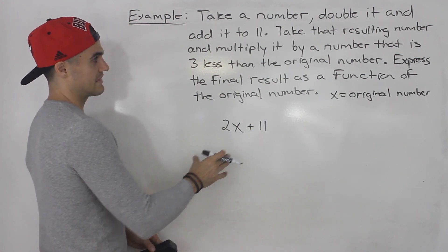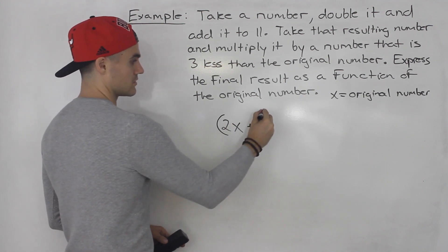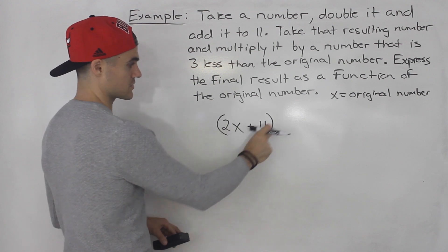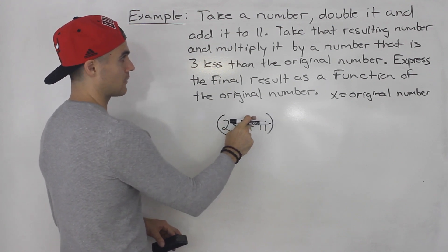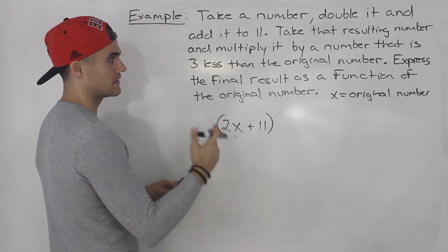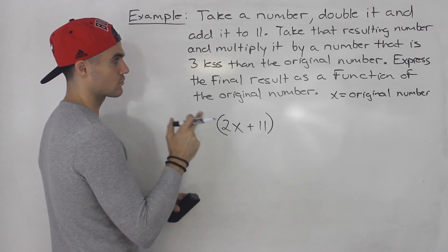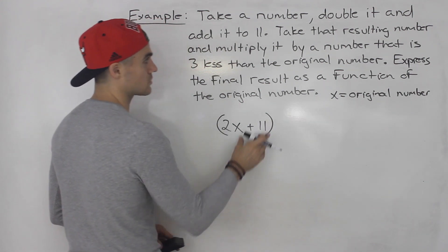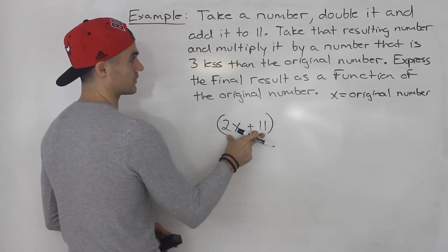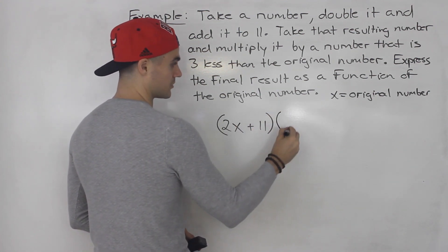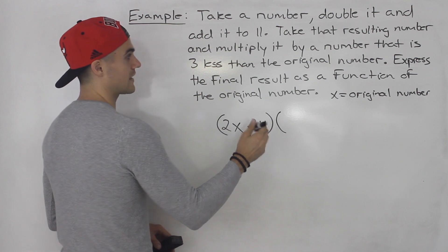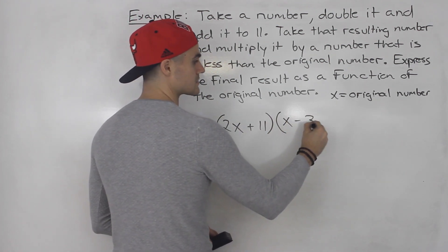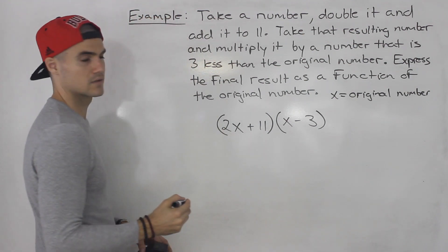Then what we're going to do is take that resulting number — so that whole expression 2x + 11 — and multiply it by a number that is three less than the original number. Remember, x is the original number, so we multiply by the original number minus three, which is (x - 3).